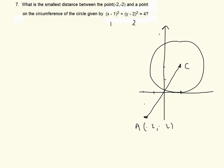The smallest distance between point A and the circle is the distance AB, where B is the point of intersection of AC and the circle. So the smallest distance D is equal to the total distance AC minus the radius. From the equation of the circle in standard form, r squared equals 4, so the radius r is equal to 2.